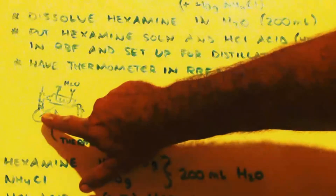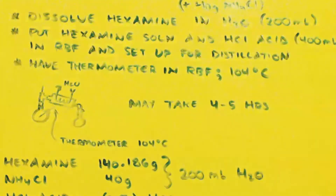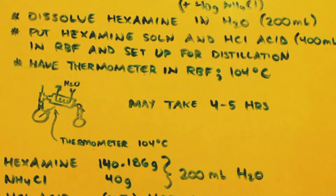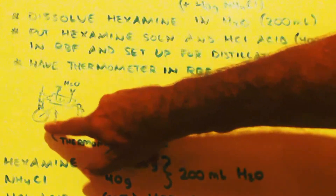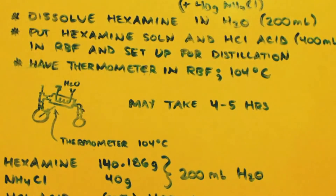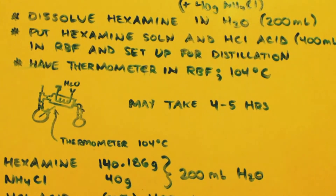Make sure it's a two-neck flask so you can put a thermometer in there. Basically, bring the temperature of the round-bottom flask itself up slowly to 104°C — not the still head, but the flask itself. Distill out whatever comes over; it may take four or five hours. Just keep distilling until nothing comes out, and then you're done.